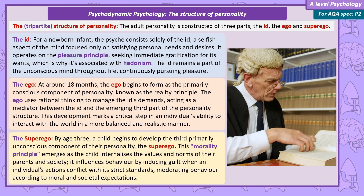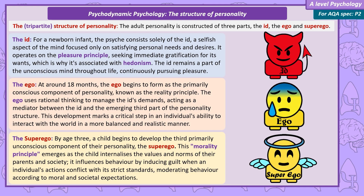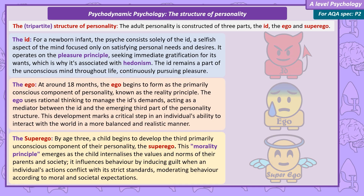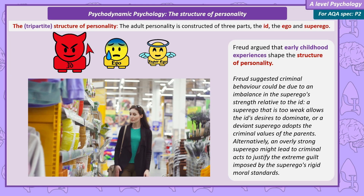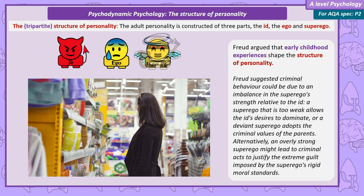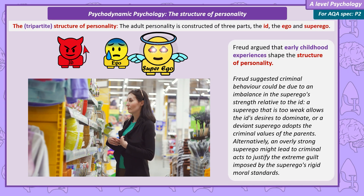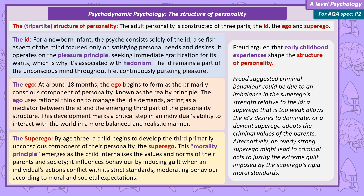The superego modifies behaviour by causing feelings of guilt when the individual's actions don't match the superego's strict rules. There are often conflicts between these aspects of personality, and it's the ego's constant role to find a balance between the id's demands for pleasure and the superego's excessive rules. These different parts of personality form the way they do because of experiences in early childhood. Freud explains criminal behaviour as due to the superego either being too weak compared to the id, deviant (where the superego learned criminal parental values), or too strong, driving the individual to commit crime to justify extreme guilt.